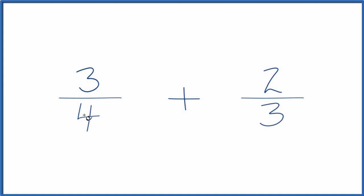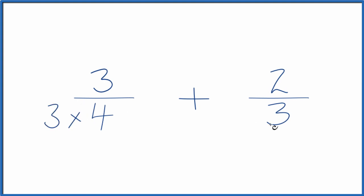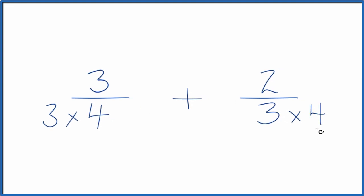Why don't we do this? Why don't we multiply 4 times 3? So 3 times 4, that would give us 12. Over here, we'll multiply 3 times 4. And 3 times 4, that's 12 as well.